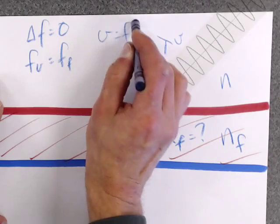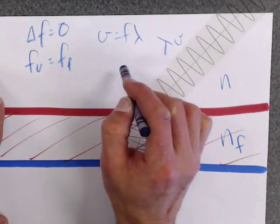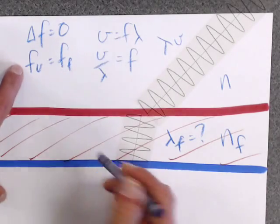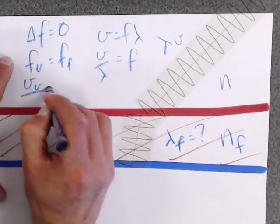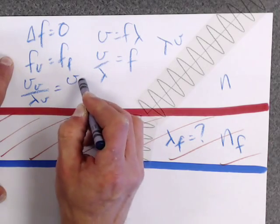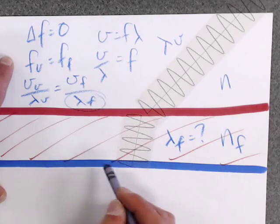And remember from V equals F lambda. That's the wave speed equation. So frequency is V over lambda. So in the vacuum I have V in the vacuum over the lambda in the vacuum is going to equal the V in the film divided by the lambda in the film. And I'm looking for this.